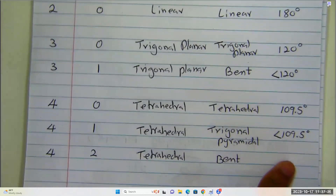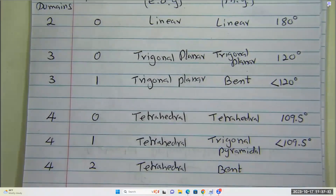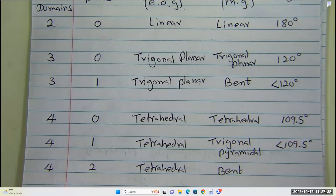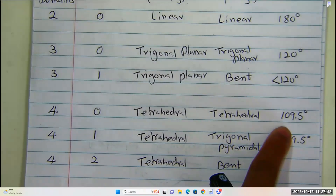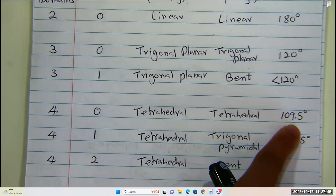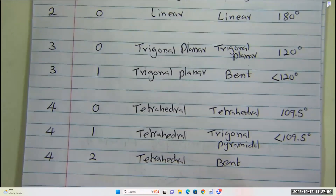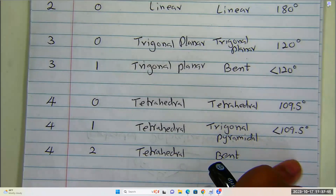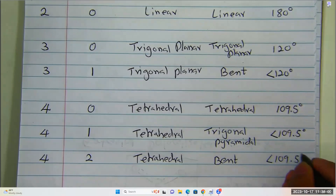What would be the bond angle in this case? The bond angle is primarily determined by the electron domain geometry, which is tetrahedral. If it is a perfect tetrahedral, it should be 109.5 degrees. But this is not a perfect tetrahedral — we have two lone pairs. The lone pairs pinch the bond angle. Therefore the bond angle would be less than 109.5 degrees. This is all the possible geometries you can get in Chem 151.